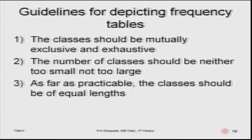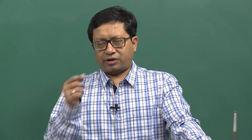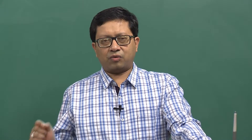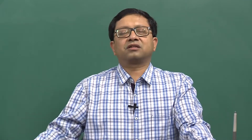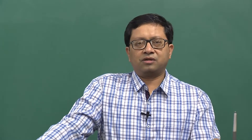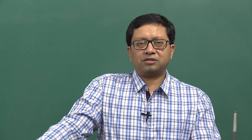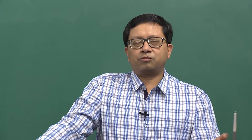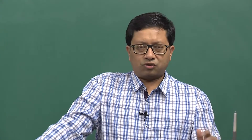Guidelines for depicting frequency tables: classes should be mutually exclusive and exhaustive; the number of classes should be neither too small nor too large; and as far as practicable, the classes should be of equal length. For example, if you want family members between 2 to 4 inclusive, then the next group would be 5, 6, 7, and so on.